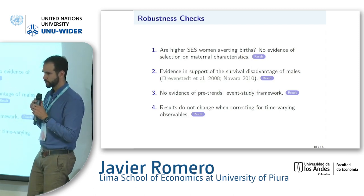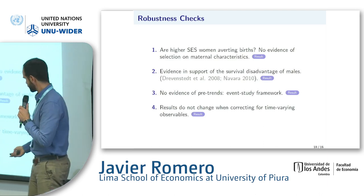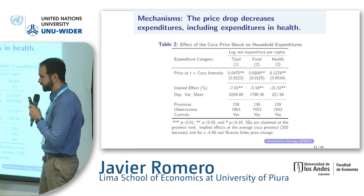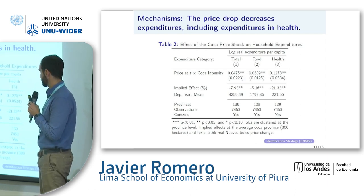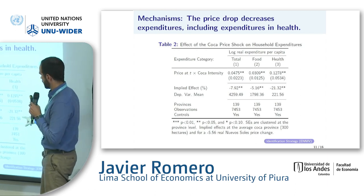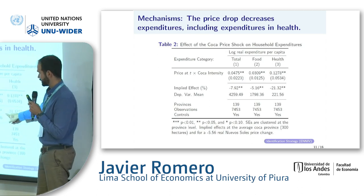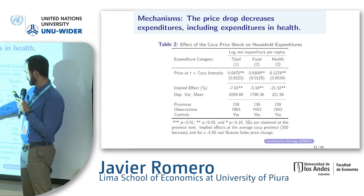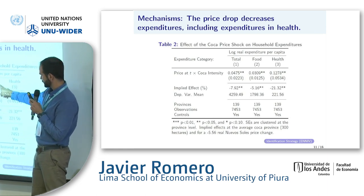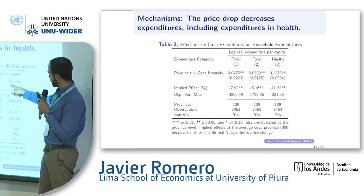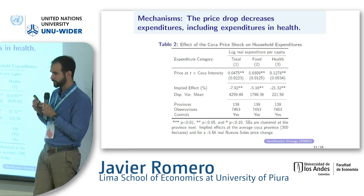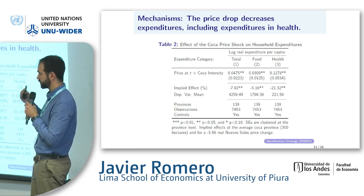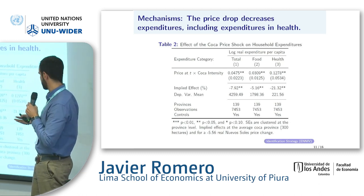Now let me walk through the mechanisms. The dependent variable here is log real expenditure per capita. What this shows is that total expenditures are falling about 7%. Expenditures in food, which are important, and health expenditures are decreasing quite a bit — in about 20%. So the first mechanism we're thinking about — health-promoting goods — is probably decreasing here.